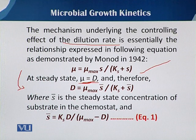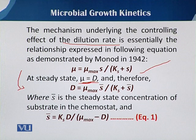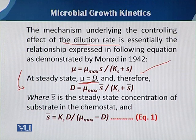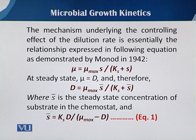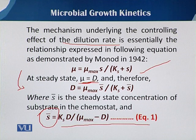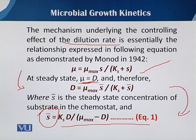The minor difference between the previous equation and this one is the distinction between s and s̄. Here, s̄ is the substrate concentration when the culture is at steady state — it is the residual substrate concentration at steady state. By this equation, if we know the dilution rate we can easily calculate the substrate at steady state by rearranging: s̄ equals Ks times D, divided by mu_max minus D.